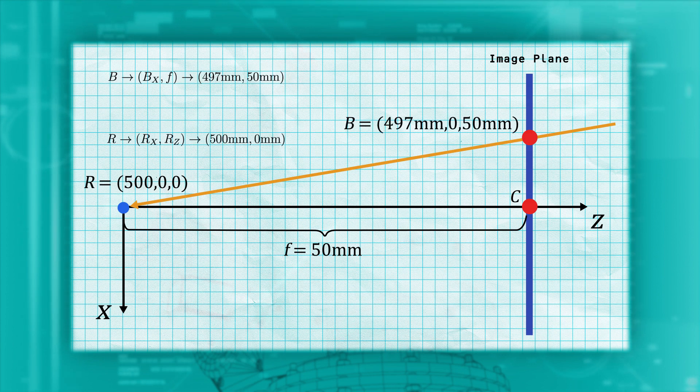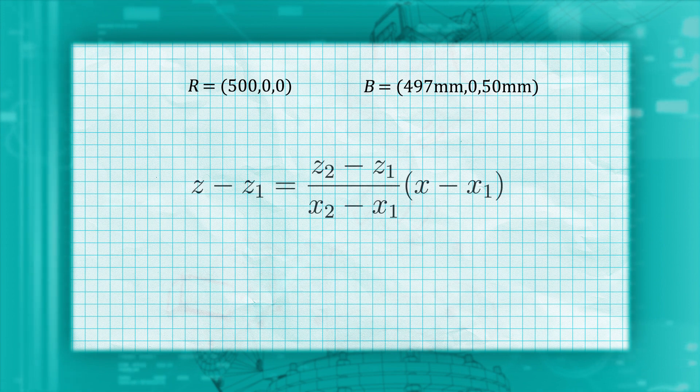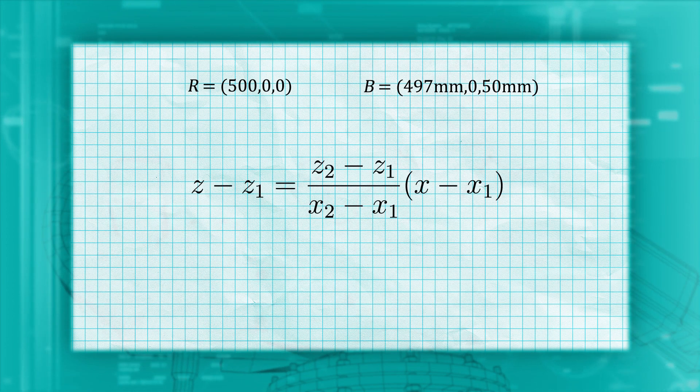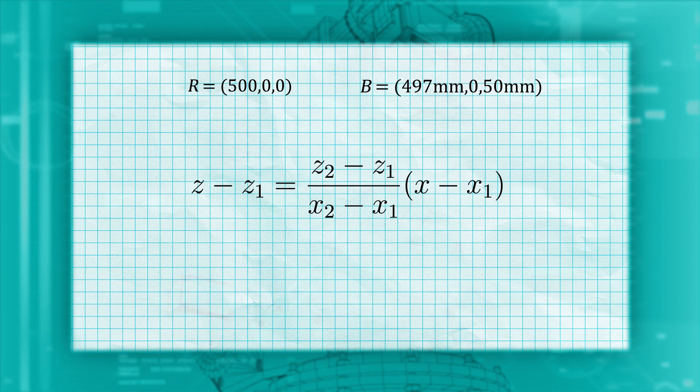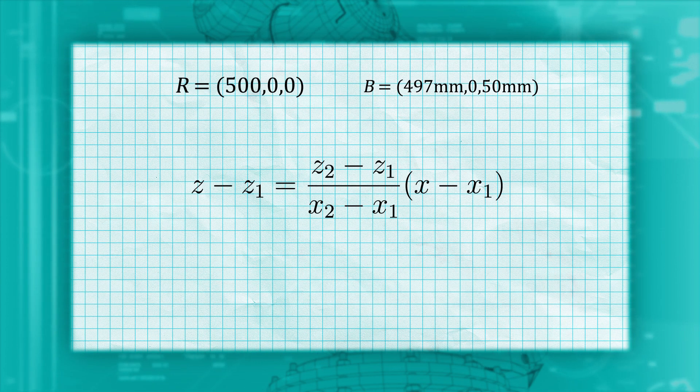Now we have our two points and can find our ray through point B. Starting with our equation for a line through two points, we know that the second point is the B coordinate and has a Z value equal to the focal length, and point one is at 500, zero.